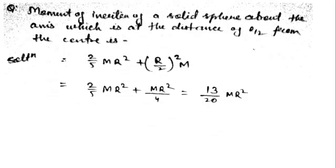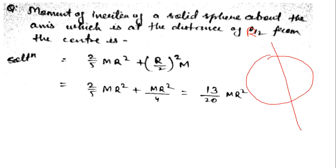Next question: moment of inertia of a solid sphere about an axis at a distance of R/2 from the center. So here your sphere has a center axis, and there is another axis at R/2 distance from the center. You need to find the moment of inertia of this sphere about that axis. Since this axis is parallel to the center axis, we apply the parallel axis theorem.